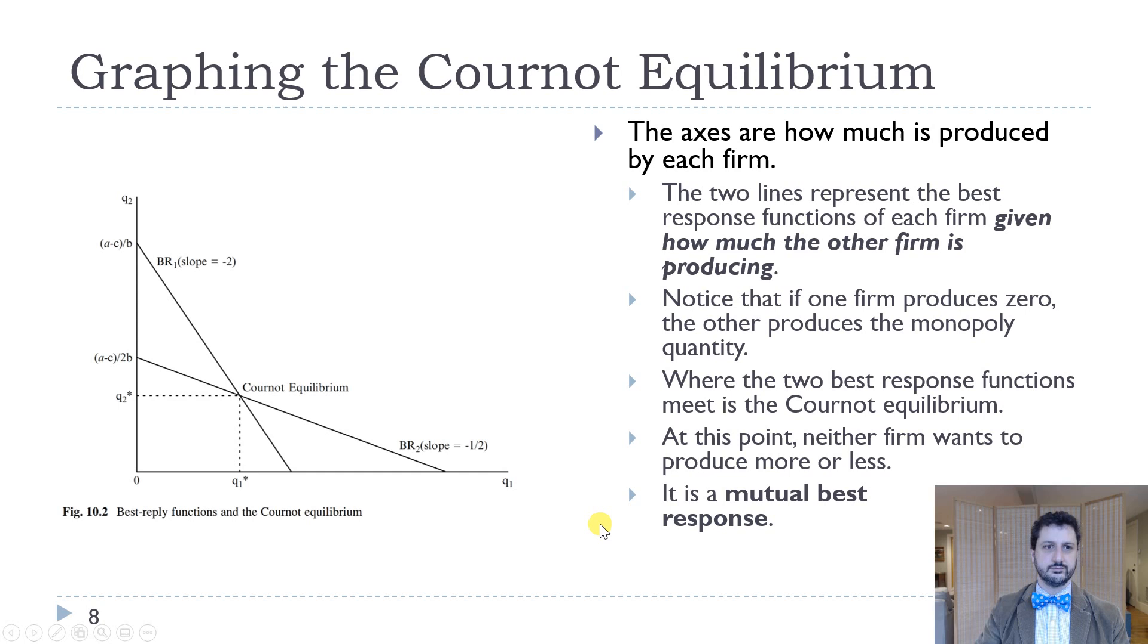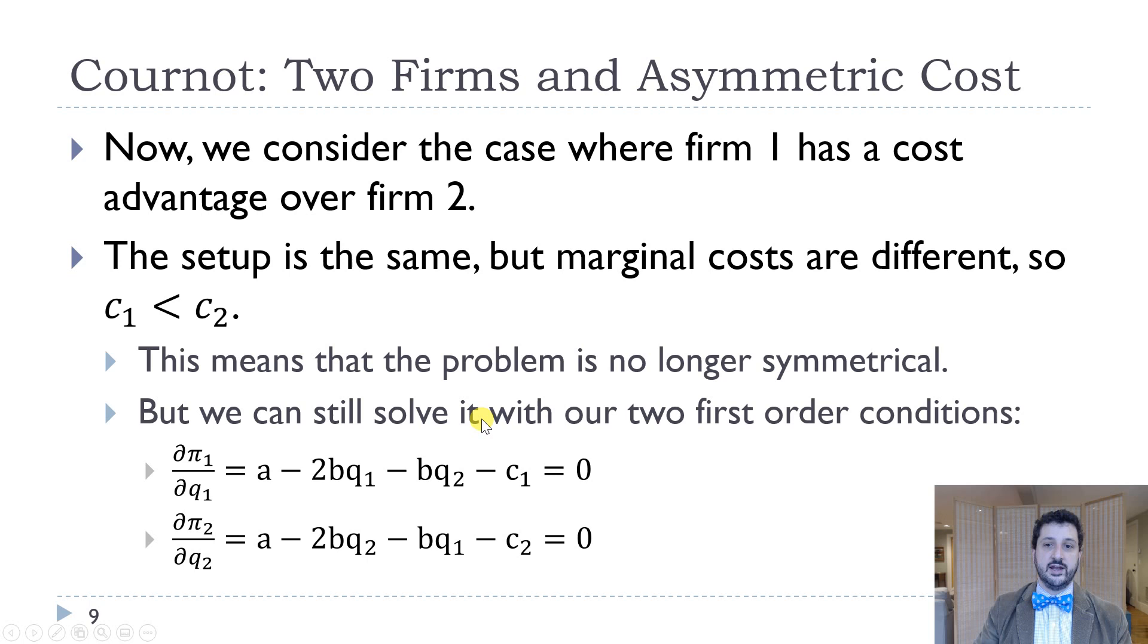Now, if they have different costs, then the problem becomes slightly more complicated, but it's really not too bad. So here we have C1 is the marginal cost for firm one. C2 is the marginal cost for firm two. And we're just assuming in this case that C1 is less than C2. So now our first order conditions are, for firm one, A minus 2BQ1 minus BQ2 minus C1 equals zero. And for firm two, A minus 2BQ2 minus BQ1 minus C2 equals zero. So they're not symmetric anymore, but we still have two equations with two unknowns, Q1 and Q2. So we can solve those.